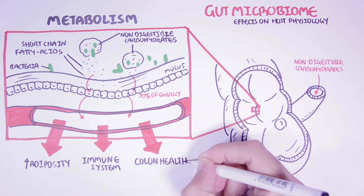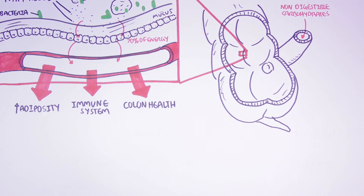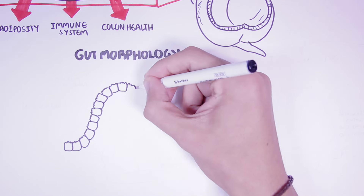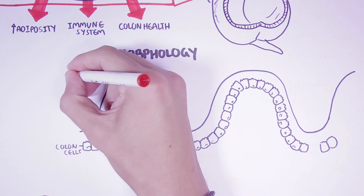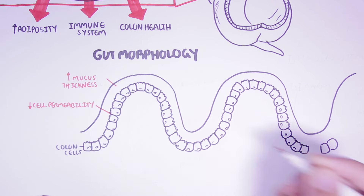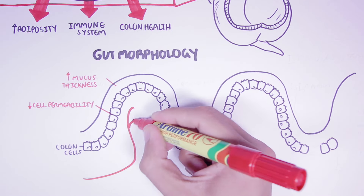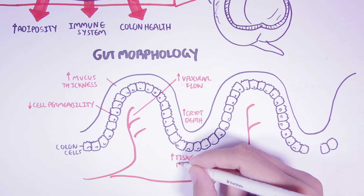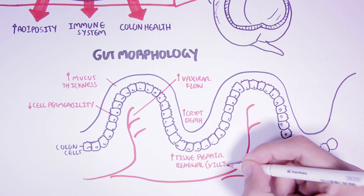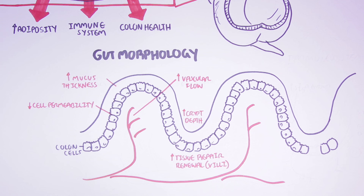Another fundamental effect the gut microbiota has on our body is its effect on gut morphology — so gut structure. These effects include increasing the amount of mucus in the intestinal tract, decreasing intestinal cell permeability, deepening the crypts of the intestine, increasing vascular flow, and stimulating tissue repair and renewal, particularly the villi. All of these effects essentially promote barrier integrity as well as the function of the digestive system. The reason how the gut microbiota modulates most of these activities remains elusive, but most research suggests it is attributed to the production of short-chain fatty acids following fermentation of non-digestible foods.